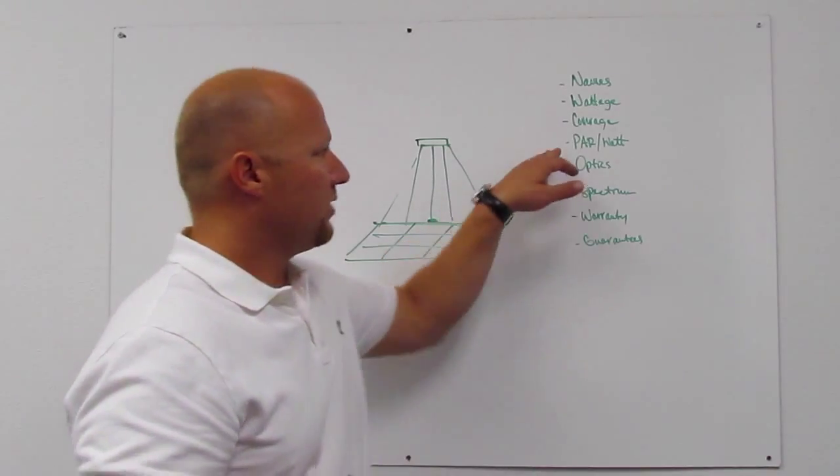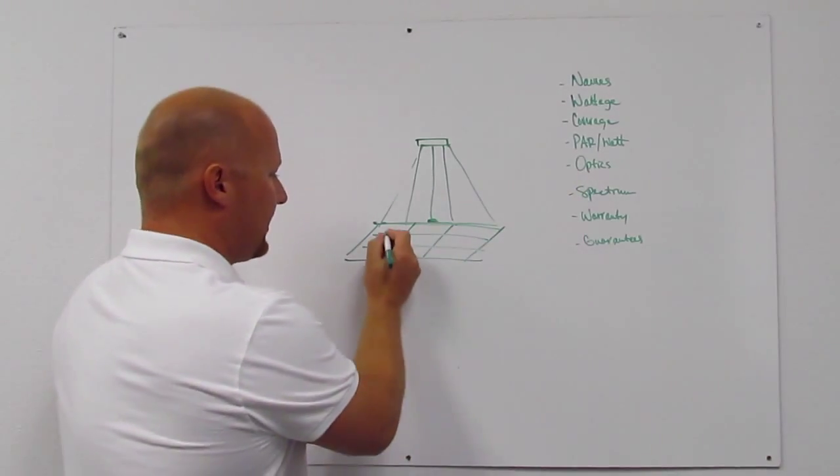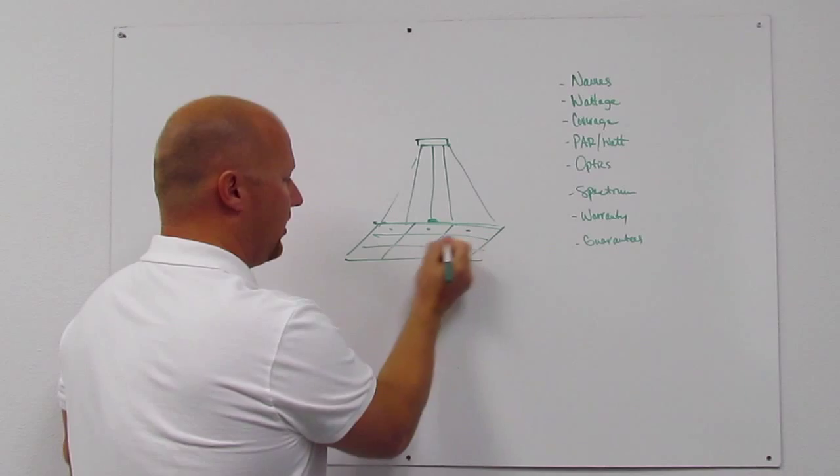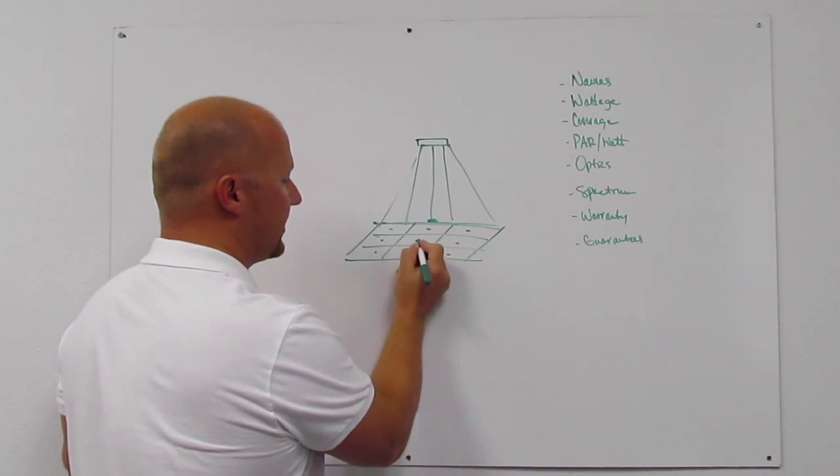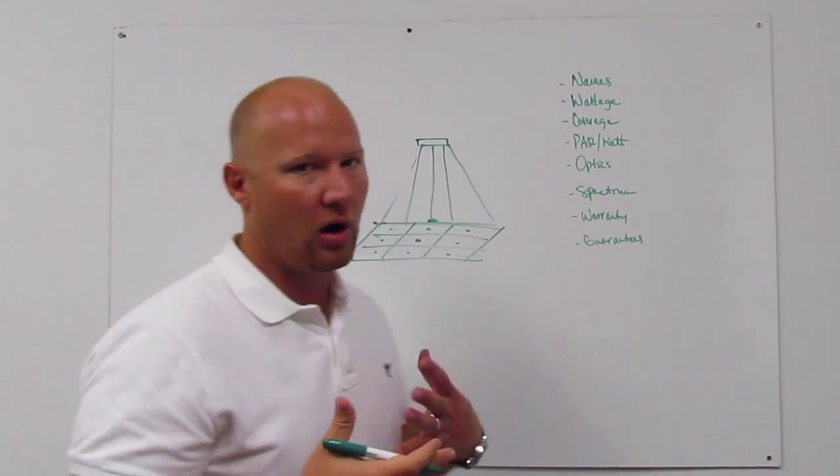What we do to measure PAR per watt is we actually take data points from a 4x4 grid, including the center. We total those, which we call mass PAR.